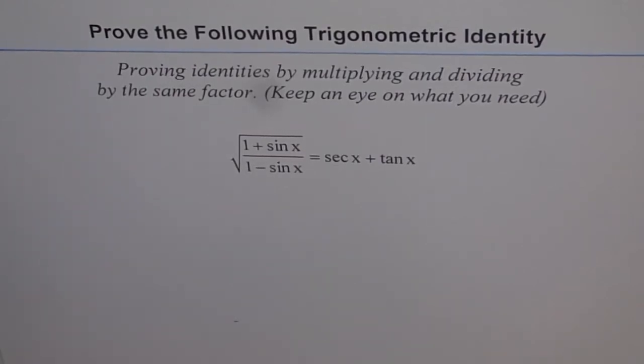Prove the following trigonometric identity: square root of 1 plus sin x divided by 1 minus sin x is equal to secant x plus tan x.